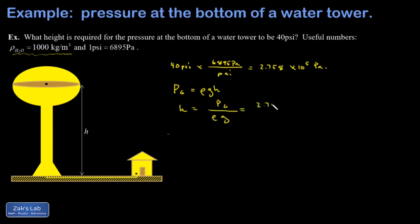So 2.758 times 10 to the 5th pascals over 1,000 kilograms per cubic meter, the density of water, times 9.8 meters per second squared, acceleration of gravity near the surface of the earth. And when I crunch the numbers on this, I get 28.1 meters for the required height of the water tower.